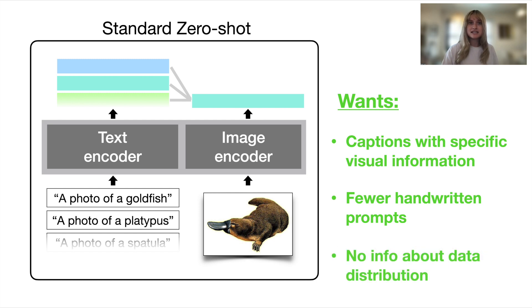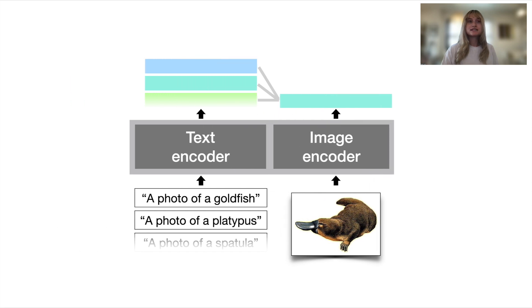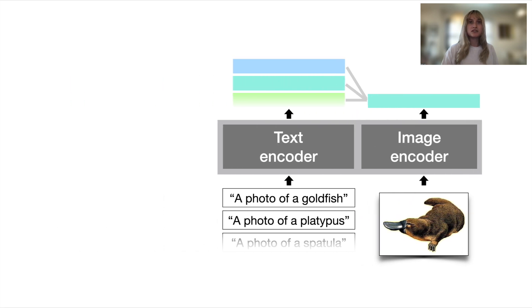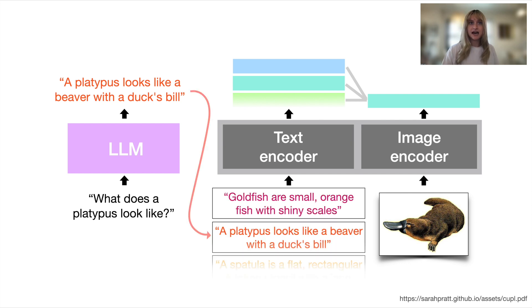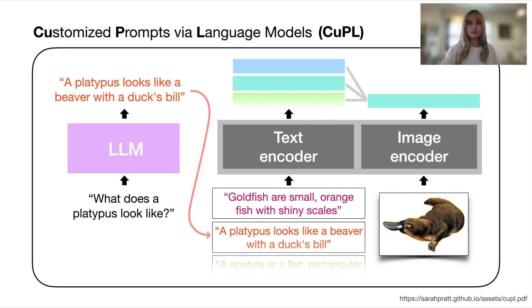And we want all of these things while still maintaining or increasing the accuracy of the model. In this work, we achieve this using a large language model. So instead of the standard setup where we use prompt templates, we are simply going to ask an LLM to provide a description or multiple descriptions of our image categories. We are then going to replace our handwritten templates with the output of our LLM. We call this method Customized Prompts Via Language Models, or CuPL for short.